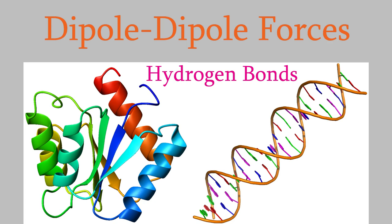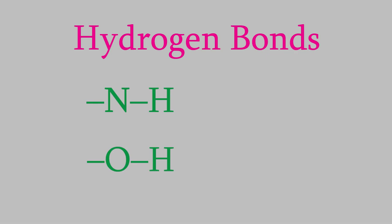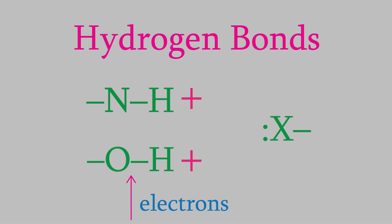A hydrogen bond is an especially strong example of a dipole-dipole force. In order to have a hydrogen bond, one of the two molecules must have a hydrogen atom bonded to a nitrogen or an oxygen. Because nitrogen and oxygen are especially electronegative, they attract electrons away from the hydrogen, which makes the hydrogen a very strongly positively charged end. The second molecule in the hydrogen bond must have an unshared electron pair, which has a very strong negative charge. So the attraction between it and the positive charge on the hydrogen in the other molecule is very powerful. Because this type of dipole-dipole force is so strong, it gets its own name: the hydrogen bond.